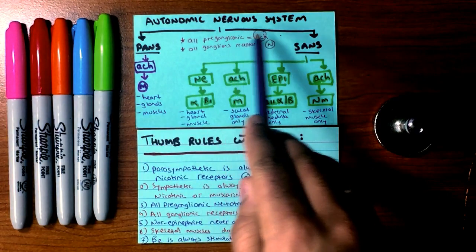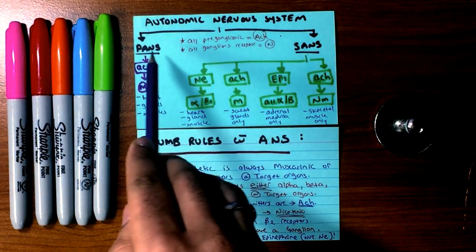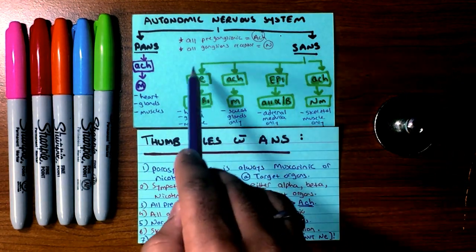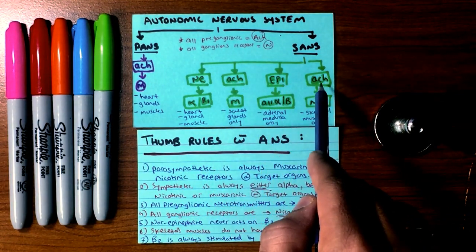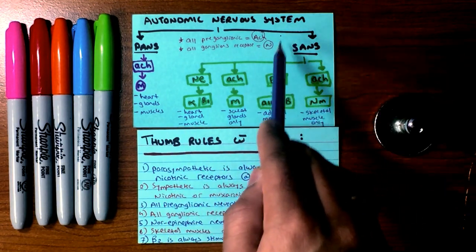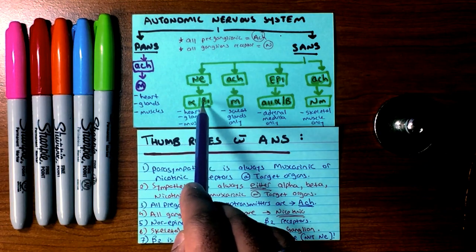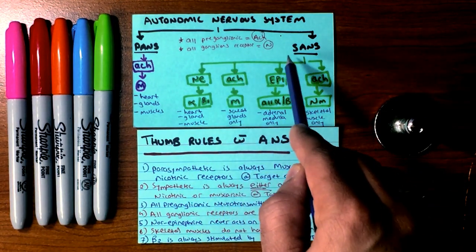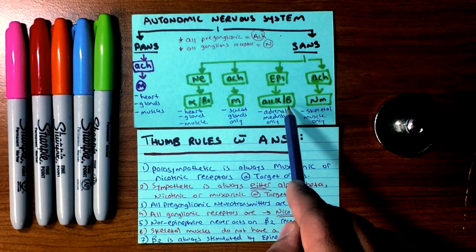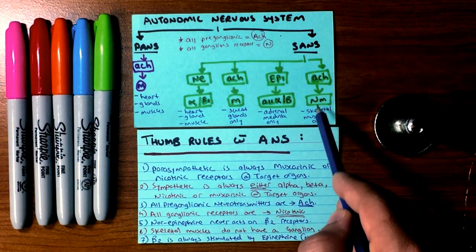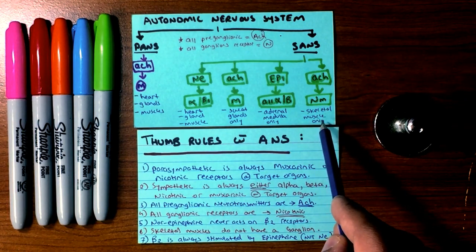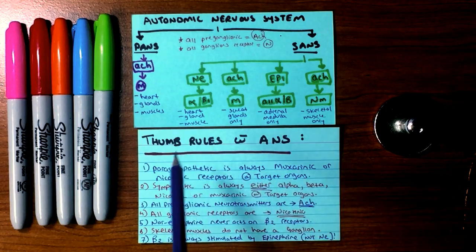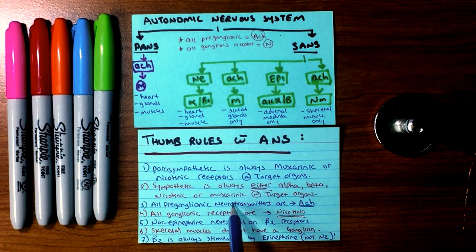As a revision: the autonomic nervous system is divided into the parasympathetic and sympathetic nervous systems. The parasympathetic goes through acetylcholine to muscarinic receptors at target organs such as the heart, glands, or muscles. The sympathetic nervous system can use norepinephrine, acetylcholine, or epinephrine. Its receptors include alpha adrenergic and beta-1 adrenergic stimulated by norepinephrine at the heart, glands, and muscles. Acetylcholine to muscarinic receptors again only at sweat glands. Epinephrine activates all alpha and beta receptors, including beta-2, at the adrenal medulla only. Acetylcholine acts at neuromuscular junctions for skeletal muscles only.